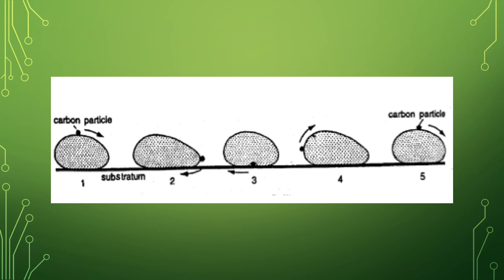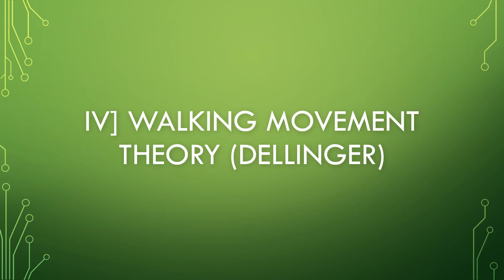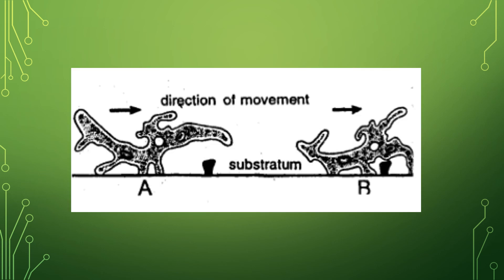Fourth theory is Walking Movement Theory proposed by Dellinger. According to this theory, amoeba walks on the substratum using pseudopodia as legs. During its movement, the pseudopodium located at the anterior end is firmly attached to the substratum. It contracts and pulls the body forward. Another pseudopodium is formed and it is attached to the substratum in front of the previous one, and the process is repeated. As you can see in this slide.